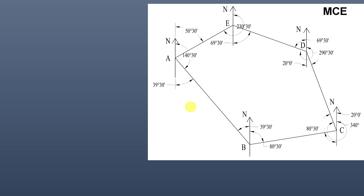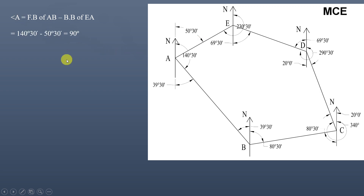From the sketch showing the forward bearings and back bearings, we can now calculate the included angles. Angle A equals the fore bearing of line AB minus the back bearing of line EA. That is 140°30' − 50°30' = 90°.